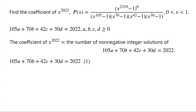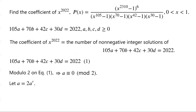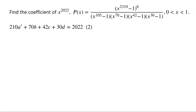We label this as equation 1. Since 70, 42, 30, and 2022 are all even, taking equation 1 modulo 2 gives A is congruent to 0 modulo 2. We let A equal 2A'. Substituting into equation 1 gives 210A' plus 70B plus 42C plus 30D equals 2022. We label this equation 2. The coefficient of X to the power of 2022 in Q of X equals the number of non-negative integer solutions of equation 2. Dividing equation 2 by 2 gives 105A' plus 35B plus 21C plus 15D equals 1011. We label this equation 3.